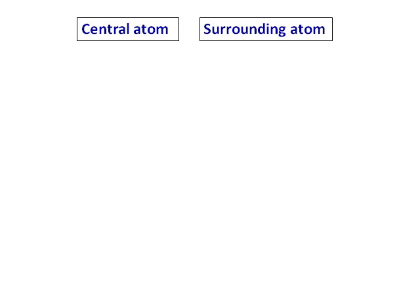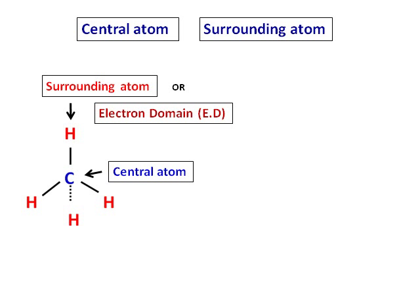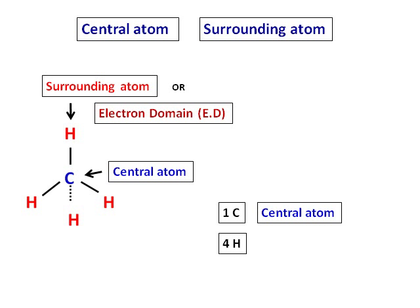Let's refresh our memory on central and surrounding atoms. Consider the compound methane, CH4. Carbon is the central atom and there are four hydrogens around it. The four hydrogens are called surrounding atoms or electron domains. So methane has four electron domains — one carbon as the central atom and four hydrogens as surrounding atoms. This is an AB4 type of molecule.